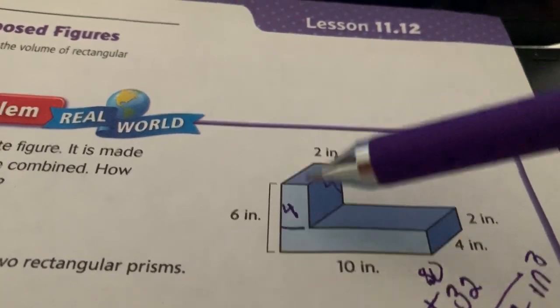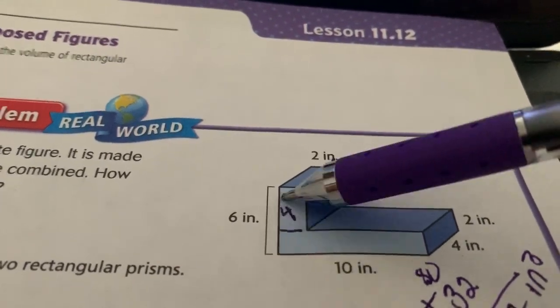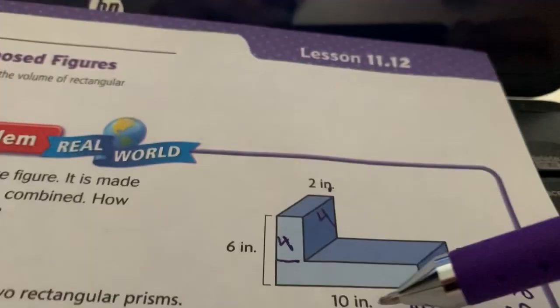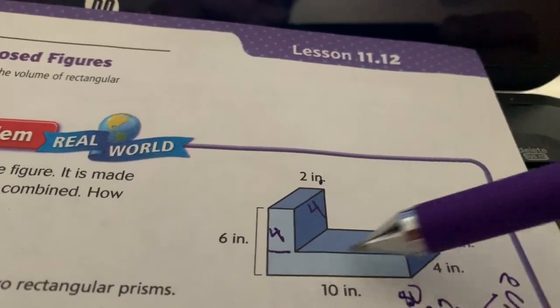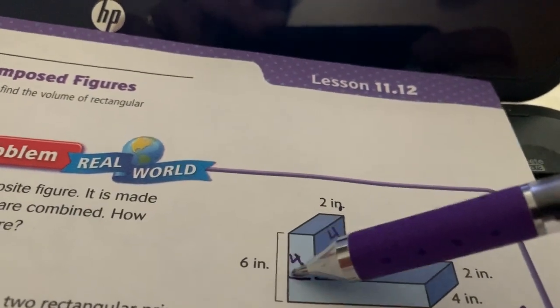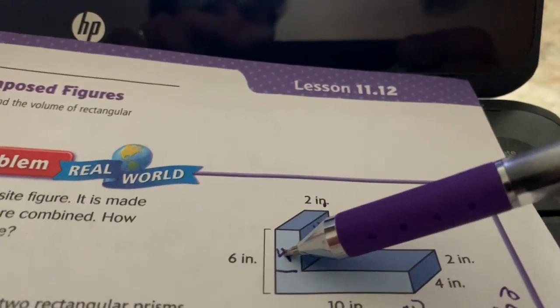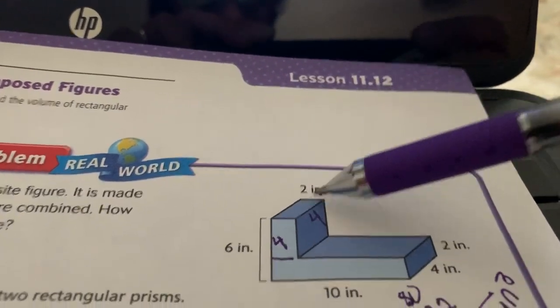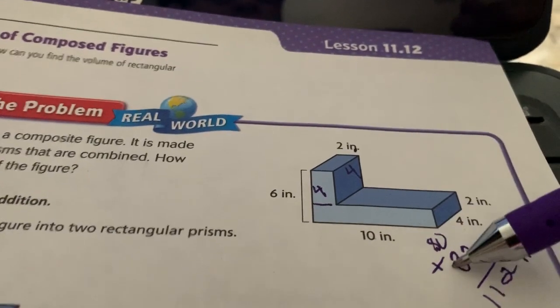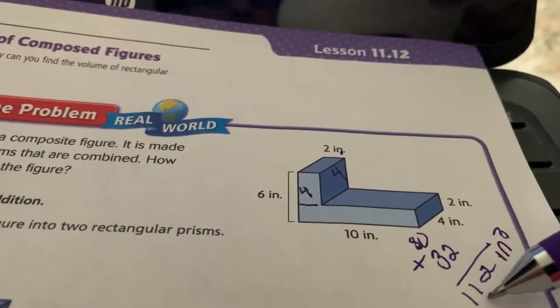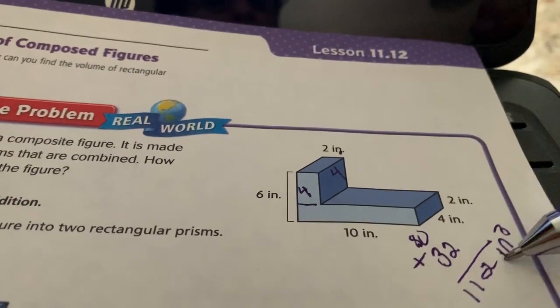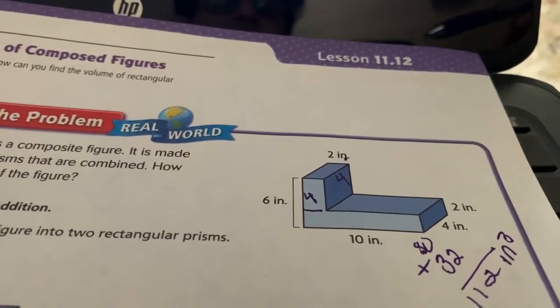I gave it to you, but how do I know here that the height is 4? Well, because I have to subtract this 2 from here, because it's only that little rectangle at the top. So it's going to be 4 times 4, which is 16, times 2, which is 32. You take those two and add them together, and your answer is 112 cubic inches.